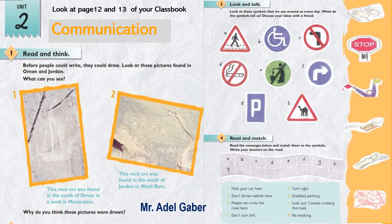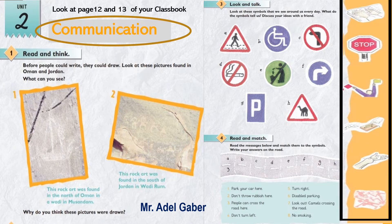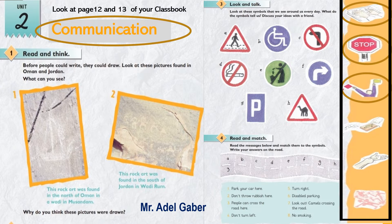Look at page 12 and 13 of your class book. It's unit 2. What is this unit about? It's about communication. Look at the frieze on page 13. What can you see in this frieze? It is Braille. This is a symbol or a sign. This is called semaphore. This is Morse code. This is gesture. This is rock art. We will learn more about these symbols all in this unit, but this tells us that this unit is going to be about different ways of communication.